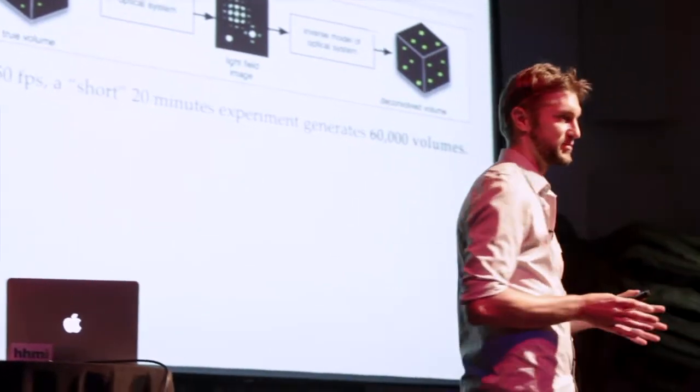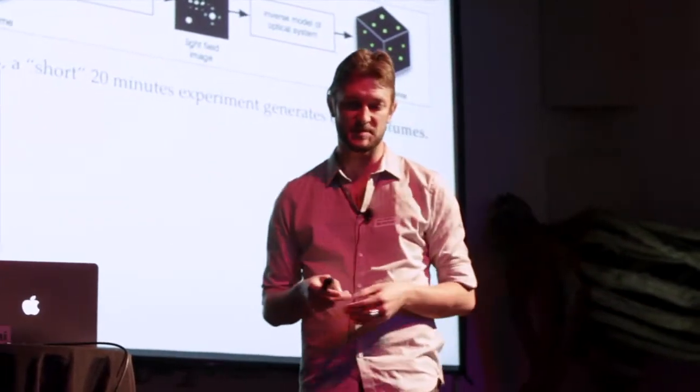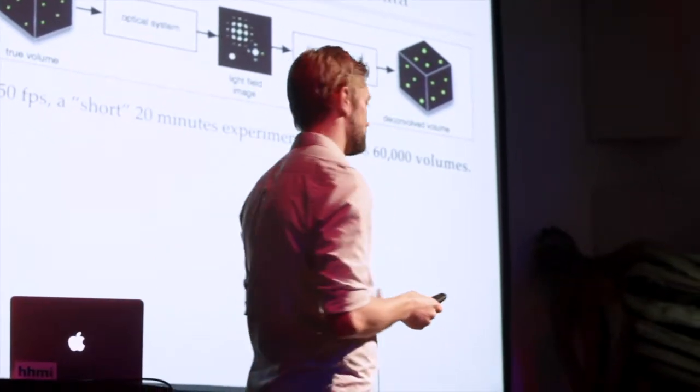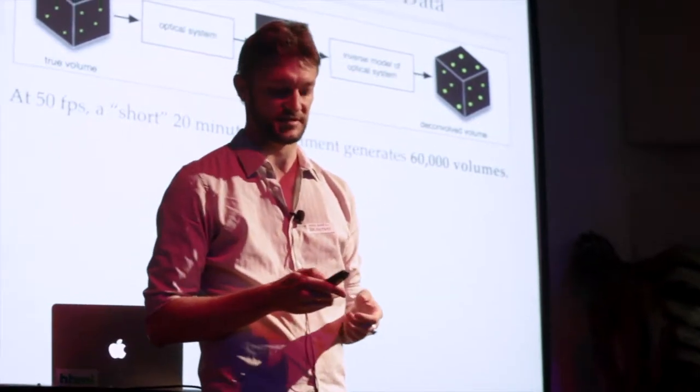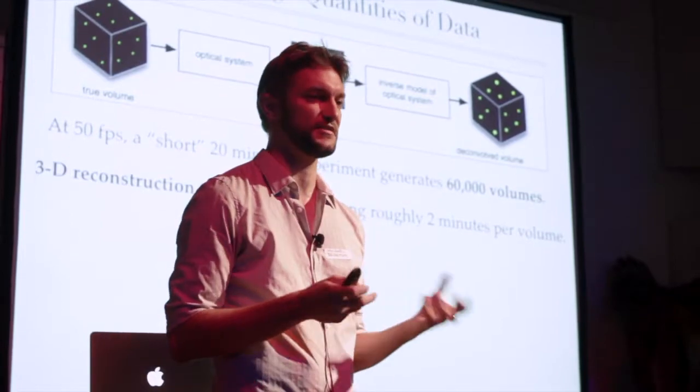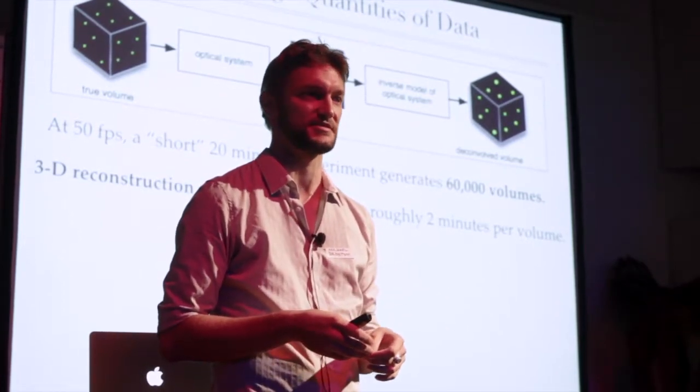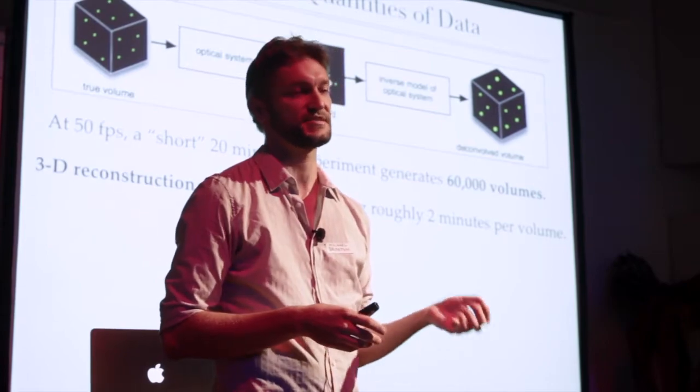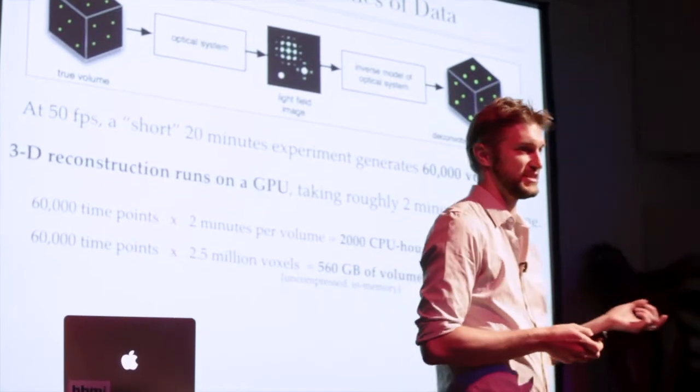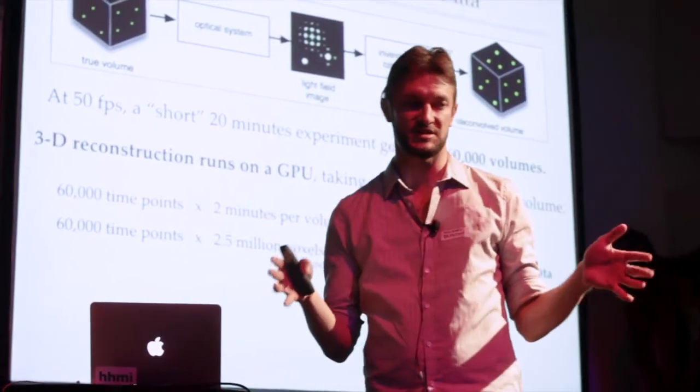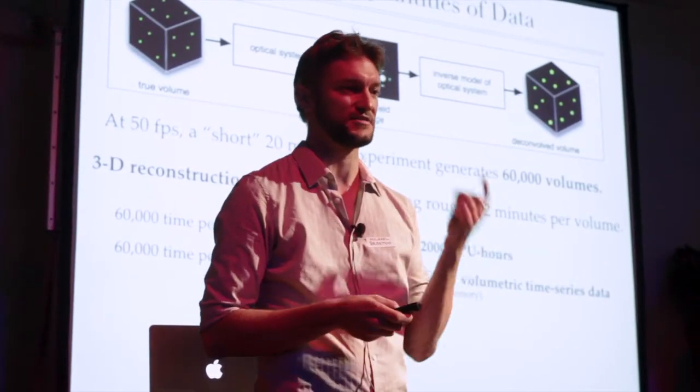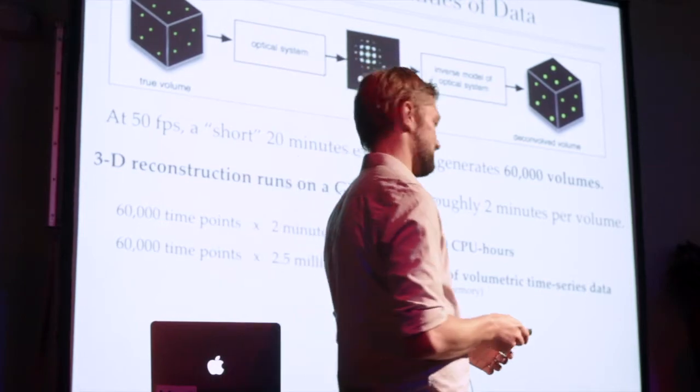So just taking a step back, a typical experiment that we would run at, let's say, 50 frames per second, which is kind of a good rate for most of these calcium indicators. Let's say that you run this experiment for about 20 minutes. You would actually collect 60,000 images. And if you were to reconstruct each of these images, it's a fairly expensive algorithm. Deconvolution is complicated and expensive. It runs on a GPU. It takes about two minutes per volume to reconstruct. So if you do the math, that means that this entire time series would take 2,000 machine hours, which is basically 84 days or so, if you had just one GPU. So it's a lot of computation.